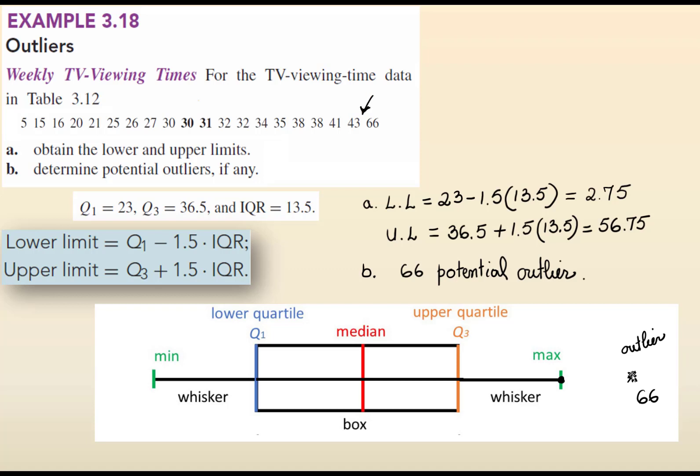Now, the outlier is 66. It's outside of the box plot. Then, the maximum becomes the adjacent number, which is 43. The minimum is 5. First quartile is 23.